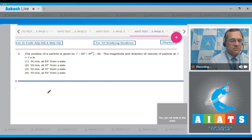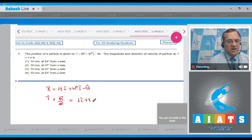Once r is given as 6t*i_cap plus 4t^2*j_cap minus 4*k_cap, the instantaneous velocity of the particle will be equal to dr/dt. When we differentiate this, it becomes equal to 6*i_cap plus 8t*j_cap minus 0.